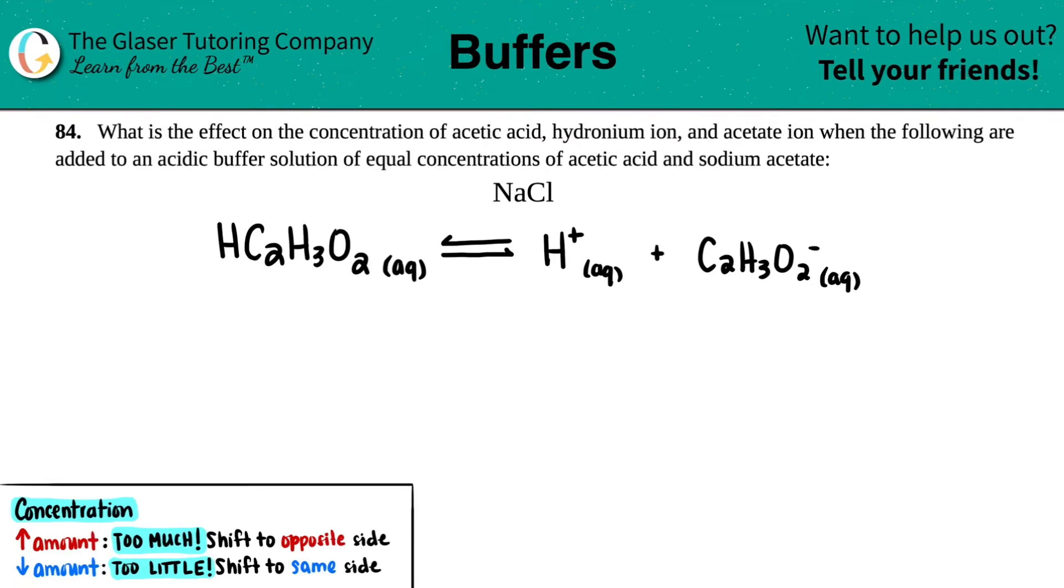Number 84, what is the effect on the concentration of acetic acid, hydronium ion, and acetate ion when the following are added to an acidic buffer solution of equal concentrations of acetic acid and sodium acetate? We're adding sodium chloride, NaCl.